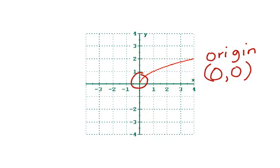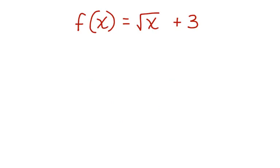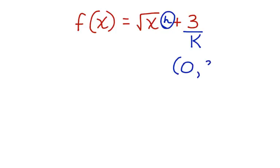Let's look at another function and determine the origin of the square root function. f(x) = √(x) + 3. Here we have a value for k but we don't have a value for h. So we put zero in for h and three in for k, and the origin of the square root function is at (0, 3).